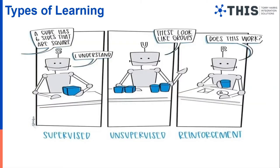So what are the different types of learning which we have in machine learning? We have three: supervised, unsupervised, and reinforcement. Let's try to understand all three of them with simple examples.